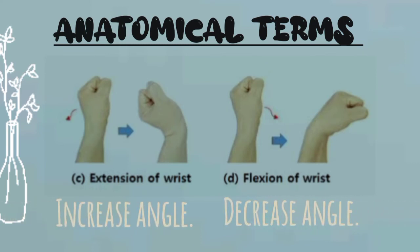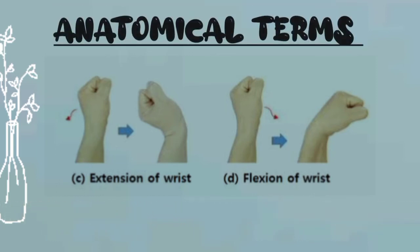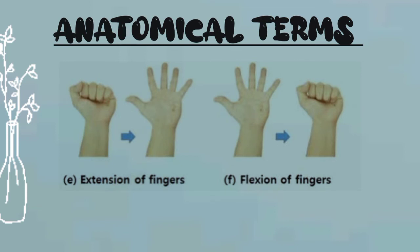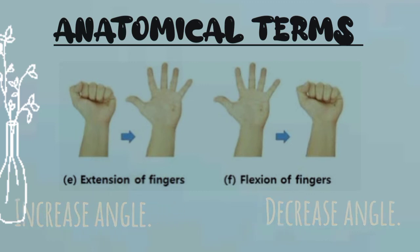If you bend your wrist toward the side of your little finger or the ulnar bone, it is called ulnar deviation. Flexion and extension movements also take place at the wrist joint. Bending your wrist forward is flexion, and bending your wrist backward is extension, which increases the angle between the carpal bones and the radius and ulna. At the fingers, grabbing or holding something is flexion, and opening your hand wide is extension.